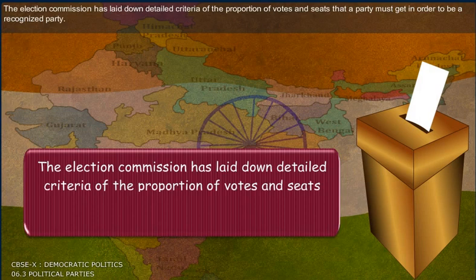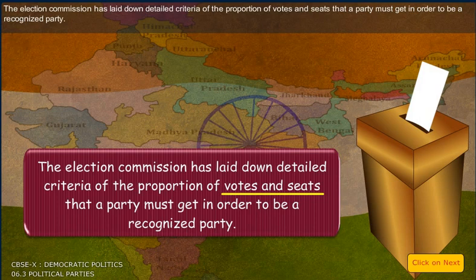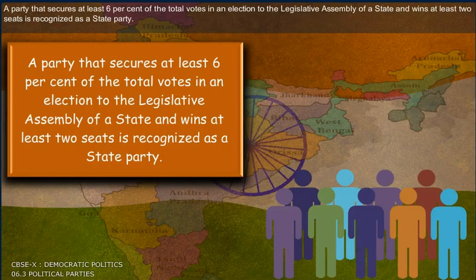The Election Commission has laid down detailed criteria of the proportion of votes and seats that a party must get in order to be a recognized party. A party that secures at least 6% of total votes in an election to the Legislative Assembly of a state and wins at least two seats is recognized as a state party.